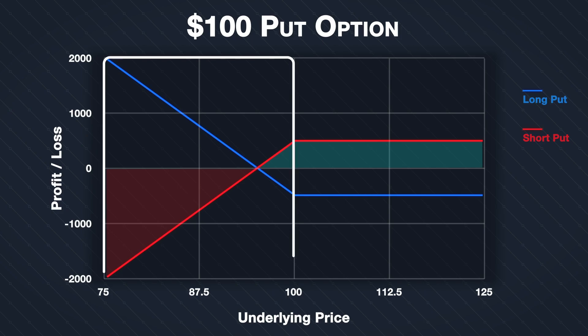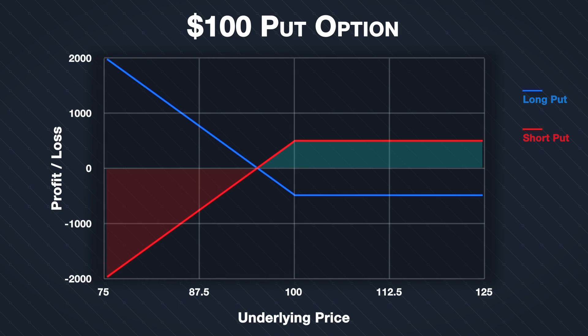When the underlying price decreases below the strike price, the potential profit for the put option buyer is limited only by the share price reaching zero. This means the potential loss for the put option seller is also only limited by the share price reaching zero. This is a key point, because even though there is technically a cap, the put option seller can still lose far more than they collected in premium, and even potentially lose everything in their trading account.